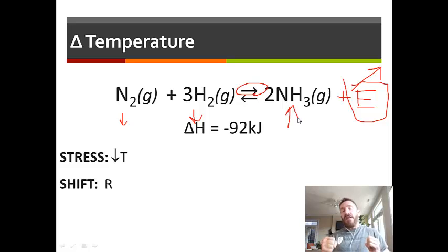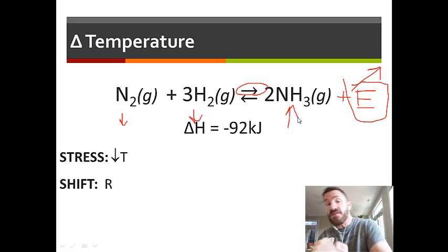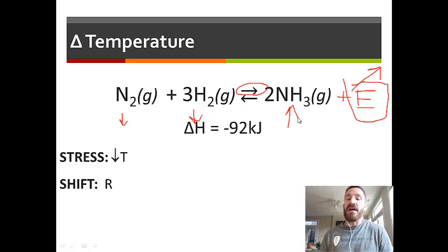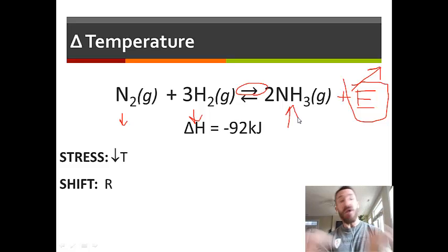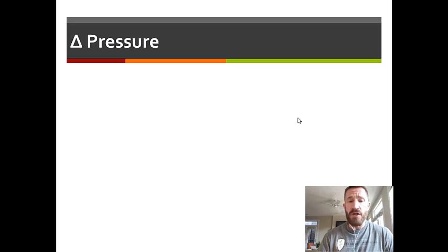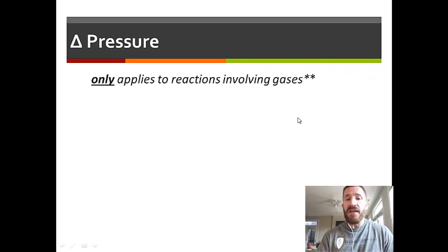An important thing to notice: this shift, where one reaction rate increases and the other decreases, happens temporarily, and then equilibrium is reestablished. Initially after the change, shift right means the forward reaction is going much faster while the reverse reaction is still happening but going much slower. The third stress is pressure, which is a bit different — it only applies to reactions involving gases.